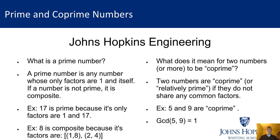Hey guys, welcome back. We're going to go ahead and get started here with Module 1. The first thing we're going to talk about is some of the cryptographic primitives that allow the RSA public key encryption algorithm to work. One of the basic and most important factors of RSA are prime numbers and also something called co-prime numbers. We're going to talk a little bit about what those two things are.